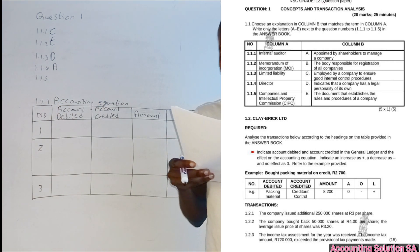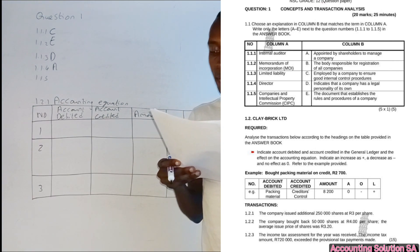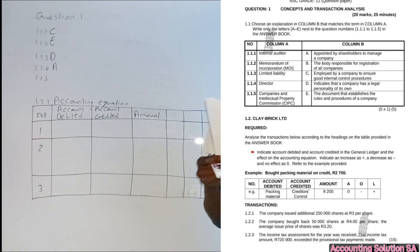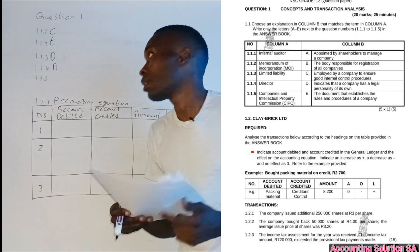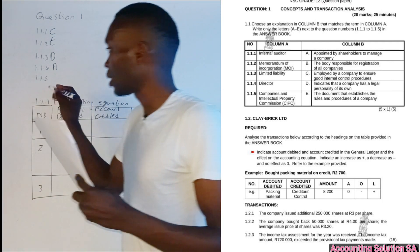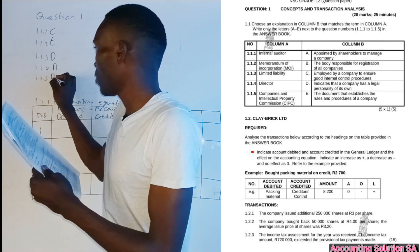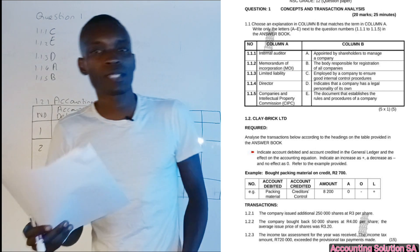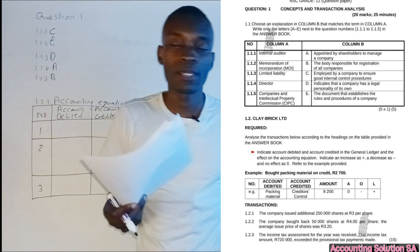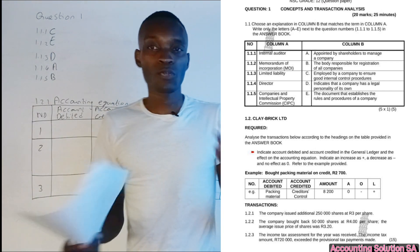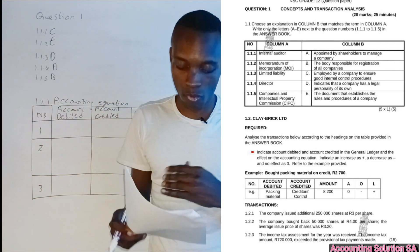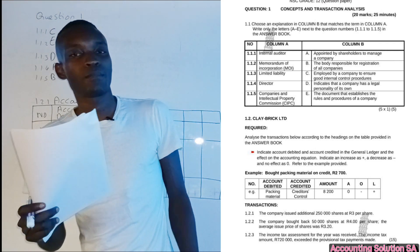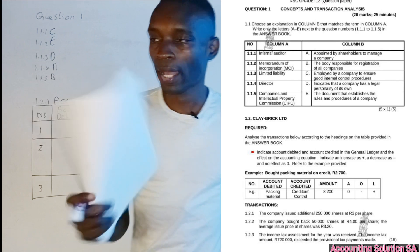The last one is obvious, going to be number B. The body responsible for registration of a company. CIPC is the body that regulates the company. Even our company, Accounting Solution SA, has been registered under CIPC. So if you want to register your company, you have to use this body.